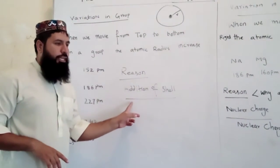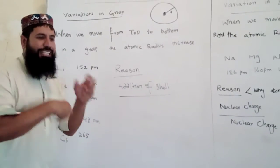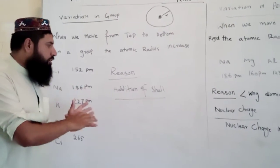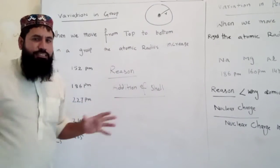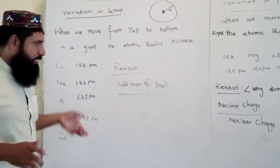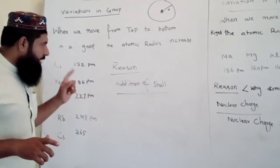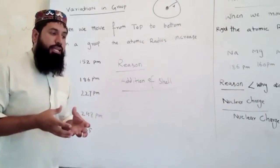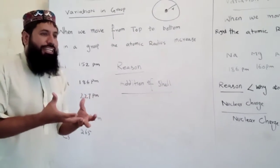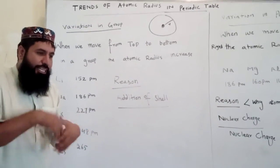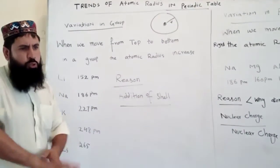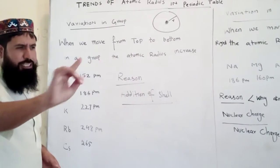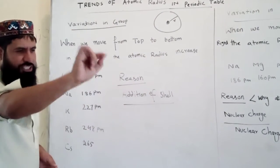Why does this increase occur? Why does atomic radius increase when we move from top to bottom? The reason is that a shell is added. When we move from top to bottom, the addition of shells increases the atomic radius. If someone asks you why atomic radius increases from top to bottom, your answer is simply: addition of shells.